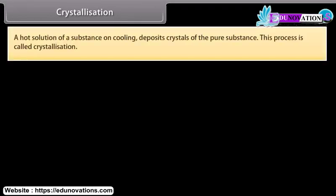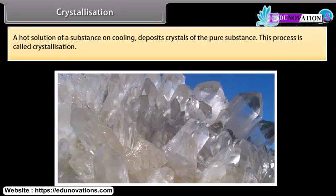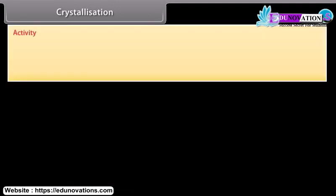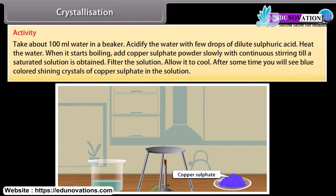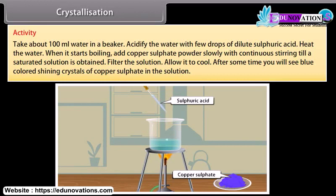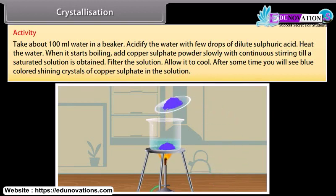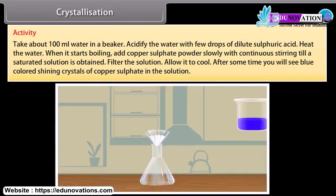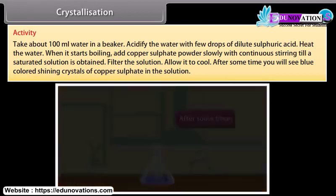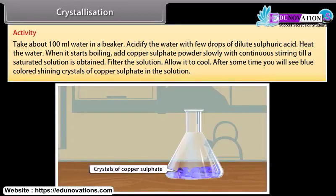Crystallization: A hot solution of a substance on cooling deposits crystals of the pure substance; this process is called crystallization. Activity: Take about 100 mL of water in a beaker and acidify it with a few drops of dilute sulfuric acid. Heat the water, and when it starts boiling, add copper sulfate powder slowly with continuous stirring until a saturated solution is obtained. Filter the solution and allow it to cool. After some time, you will see blue-colored shining crystals of copper sulfate in the solution.